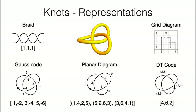I can represent a knot in many different forms. If I want to feed this object to a machine learning algorithm, I need to turn it into data. I could write it as the closure of a braid, associate a Gauss code with it — a bunch of integers — turn it into a planar diagram by projecting and labeling crossing strands, use a DT code, or turn it into a grid diagram, which is a matrix of zeros and ones. The key point is that these encodings require very different numbers of values to describe the same object.